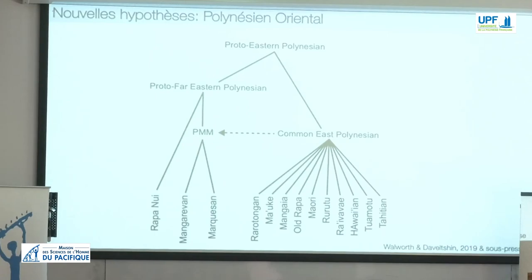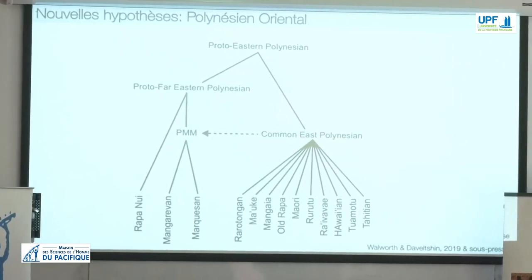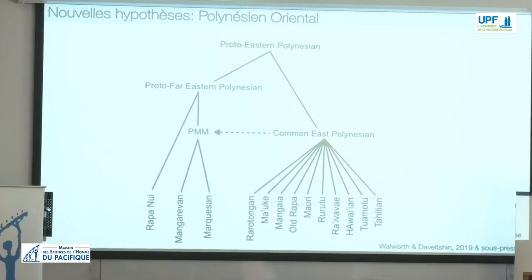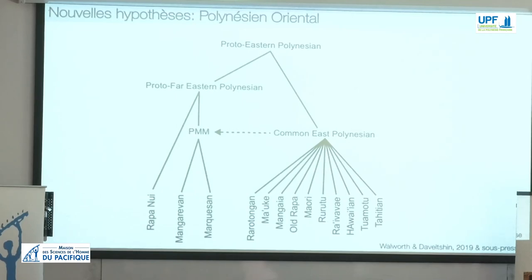After Proto-Eastern Polynesian, there was a split into two groups: Far East Polynesian, consisting of Mangerewa, the Marquesan varieties, and Rapa Nui; and Common East Polynesian, made up of the rest of the eastern Polynesian languages. We chose the name Common East Polynesian rather than Central due to the large number of languages included and the inclusion of geographically non-central languages like Maori and Hawaiian. After Rapa Nui separated, there's evidence of continued cohesion between Mangerewa and the Marquesas, and we can reconstruct a Proto-Mangerewa and Marquesan. After Marquesan and Mangerewa split, both languages participated in linked innovations of the Common East Polynesian networks. Far East Polynesian and Proto-Mangerewa and Marquesan are innovation-defined, while Common East Polynesian is innovation-linked, meaning it represents significant and prolonged contact.